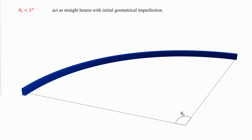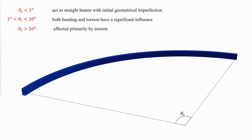Closed sections provide efficient resistance to these deformations. The behavior of curved beams is dependent on the span angle theta. Beams with span angles less than 1 degree are dominated by flexure, acting as a nominally straight beam with an initial geometric imperfection. For beams with span angles between 1 and 20 degrees, both bending and torsion have a significant influence on the behavior. When the span angle is greater than 20 degrees, the behavior is affected primarily by torsion.